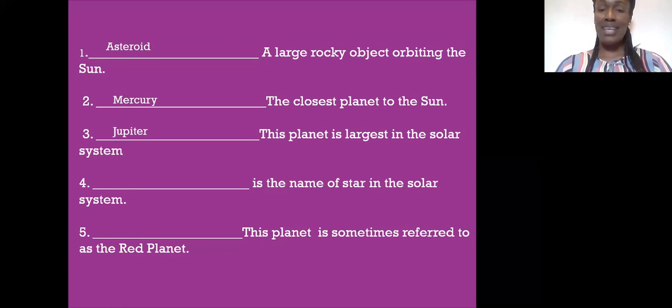Blank is the name of the star in the solar system. Let me give you a hint, it is the most important object in the solar system. If you got Sun, you are correct.